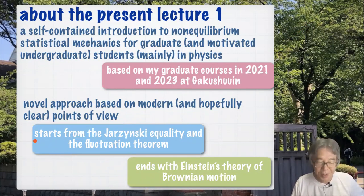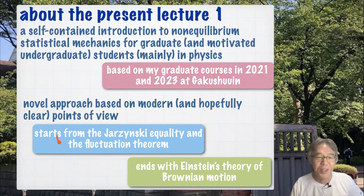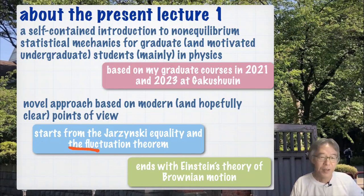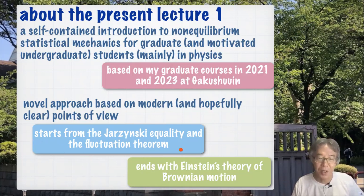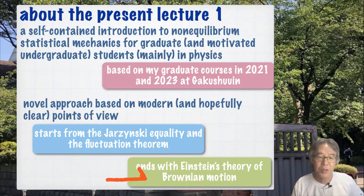I want to stress that I'm not simply trying to be different. I believe that this is a good way of presenting non-equilibrium statistical mechanics. The fluctuation theorem in some settings is very easy to understand — much, much easier to understand than the Langevin equation, which is the starting point in many books on the theory of Brownian Motion.